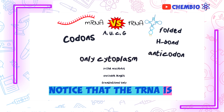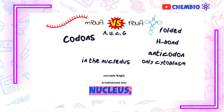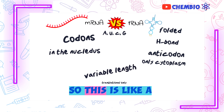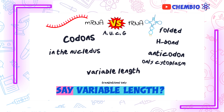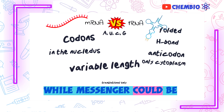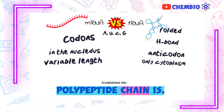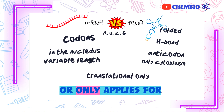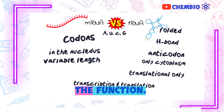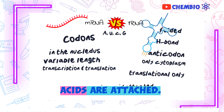tRNA is only found in the cytoplasm, while messenger RNA can be found both in the cytoplasm and the nucleus — messenger RNA is the only one that can be found inside the nucleus. Regarding length: tRNA has a specific fixed size and number of bases, while messenger RNA has variable length depending on how long the gene is on the DNA or how long the polypeptide chain is. tRNA is involved in translation only, while messenger RNA is involved in both transcription and translation. And amino acids are attached only to tRNA, at the top part of the molecule.